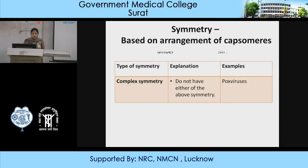The third type of symmetry is complex symmetry, meaning the virus does not have either helical or icosahedral symmetry. Only one DNA virus — the pox virus — has this type of complex symmetry.